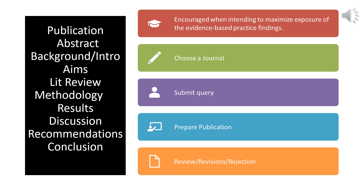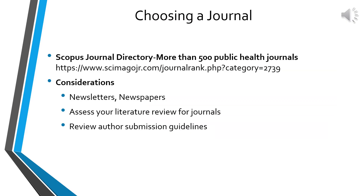In the next several slides we will discuss the steps in the writing process, from choosing a journal and submitting a query to preparing the publication. Quantitative quality improvement or research papers typically include an introduction, methods, results, and discussion section, as well as aims and objectives, the literature review, recommendations, and the conclusion.